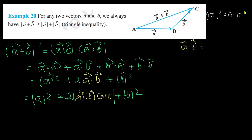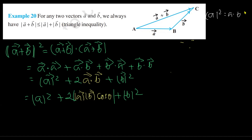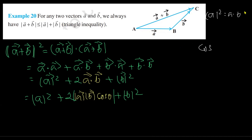Now cosθ should also be in modulus because we are finding the modulus. We know that cosθ varies from −1 to 1, but we are looking for |cosθ|, so it has to be less than or equal to 1.